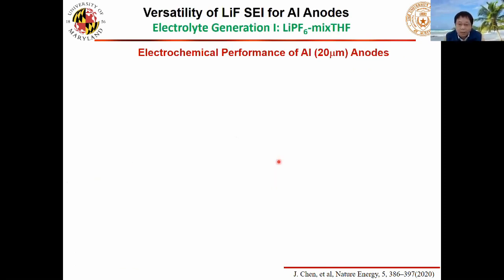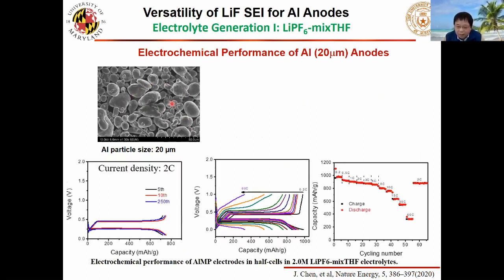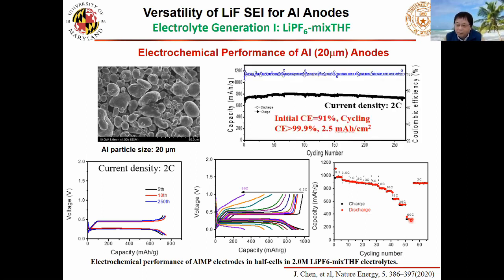If this principle is right, it should be universal. We check aluminum — 20 micron aluminum without any treatment — we charge/discharge at different rates. Even at 80C, it retains a really large amount of capacity. The reason is aluminum is a better electronic conductor than silicon, so we can go to 80C and still get very high capacity. Cycle life: we can go to more than 250 cycles with micro-size aluminum — nobody can demonstrate this kind of performance. Efficiency is 99.93% and first-cycle efficiency is 91% — similar to graphite.